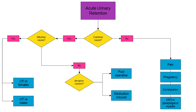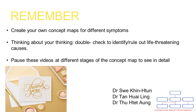Some less common causes of acute urinary retention include pain, pregnancy, constipation, cauda equina syndrome, paraplegia, or myelitis. Thank you for listening to this concept map presentation of urinary retention.